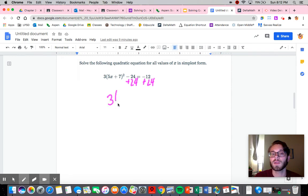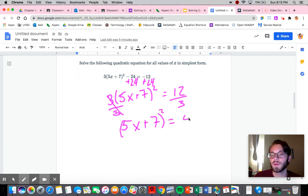So if I add the 24 to both sides, I end up with 3 times 5x plus 7 squared is equal to 12. Now conveniently, 12 is divisible by 3, so we luck out on that one. So when we divide by 3, I end up in a scenario where I have 5x plus 7 squared is equal to 4.